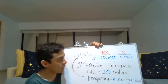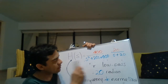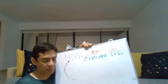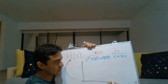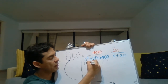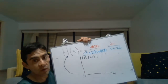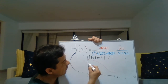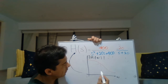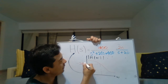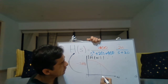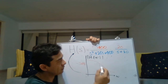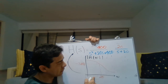Let me explain the difference between the frequency-normalized version and the non-normalized version. In the frequency-normalized version, we have a magnitude response where the minus 3 dB point takes place at the cutoff frequency.